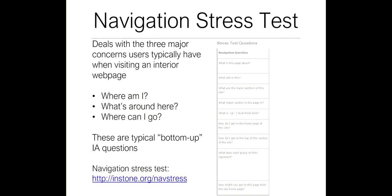Bottom-up IA also provides information on content structure, sequencing, and tagging. For the Amazon page, there's almost certainly a tag for 'information architecture,' and that same metadata is applied to similar books, which is what makes them come up and be displayed. A useful exercise is the navigation stress test — a set of questions dealing with three major concerns users typically have when visiting an interior web page: Where am I? What's around where I am? Where can I go next?